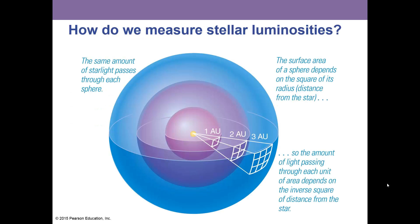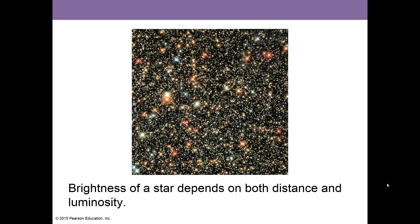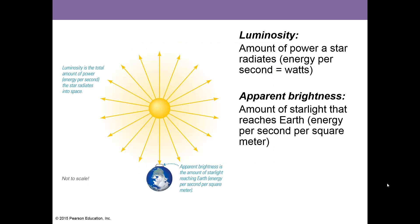How do we measure stellar luminosity or brightness? Brightness of a star depends on both the distance and the luminosity. Luminosity pretty much means the intrinsic brightness of the star no matter how far away it is—how bright is it really? Luminosity is defined as amount of power a star radiates energy per second in a unit called watts. The apparent brightness, however, is the amount of starlight that is received at the Earth.